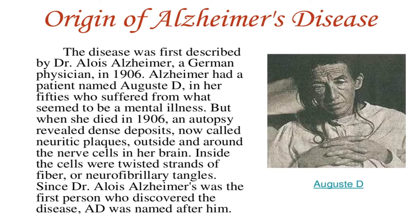The disease was first described by Dr. Alois Alzheimer, a German physician, in 1906. Alzheimer had a patient named Auguste D. in her fifties who suffered from what seemed like a mental illness. When she died in 1906, an autopsy revealed dense deposits — now called neuritic plaques — outside and around the nerve cells in her brain. Inside the cells were twisted strands of fiber, or neurofibrillary tangles. Since Dr. Alois Alzheimer was the first person who discovered the disease, Alzheimer's disease was named after him.